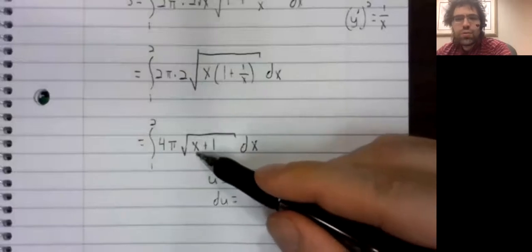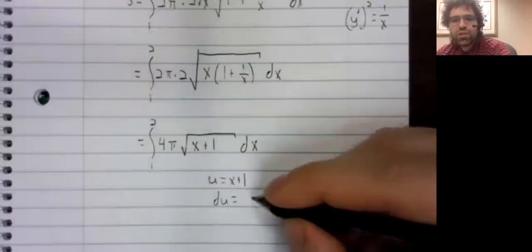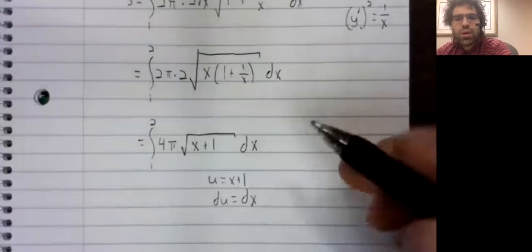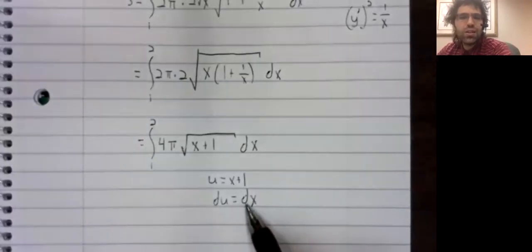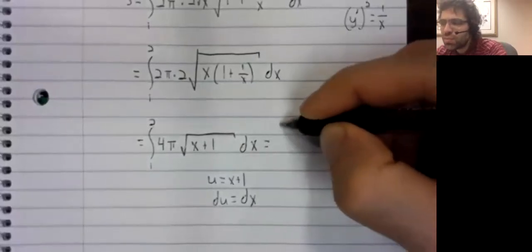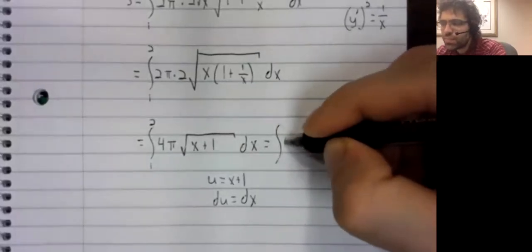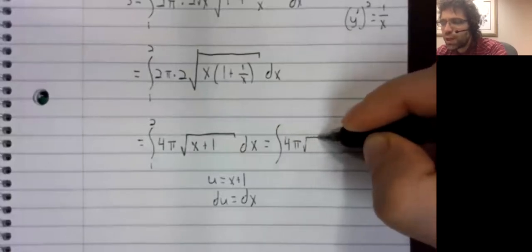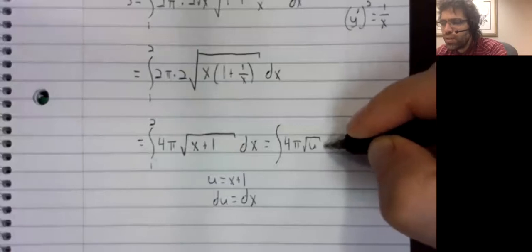Well, if u equals x plus one, that's so simple that du equals dx. And we've just got the square root of u du.